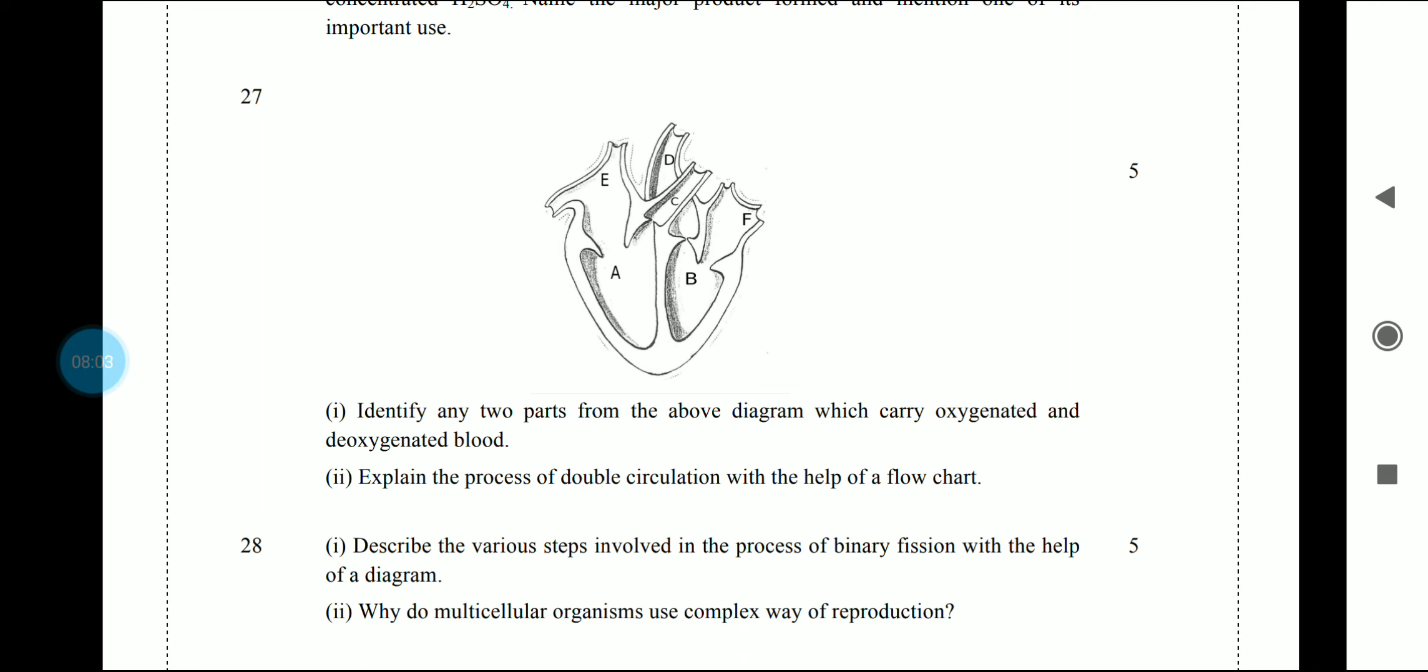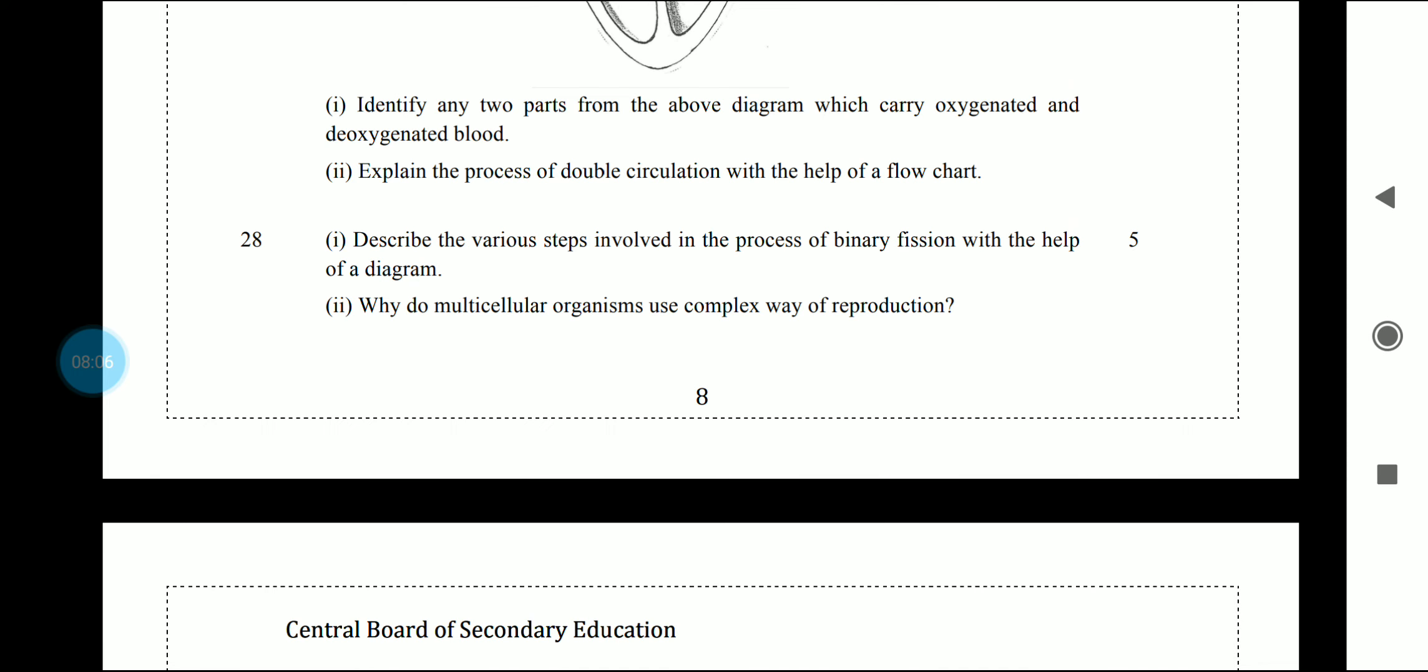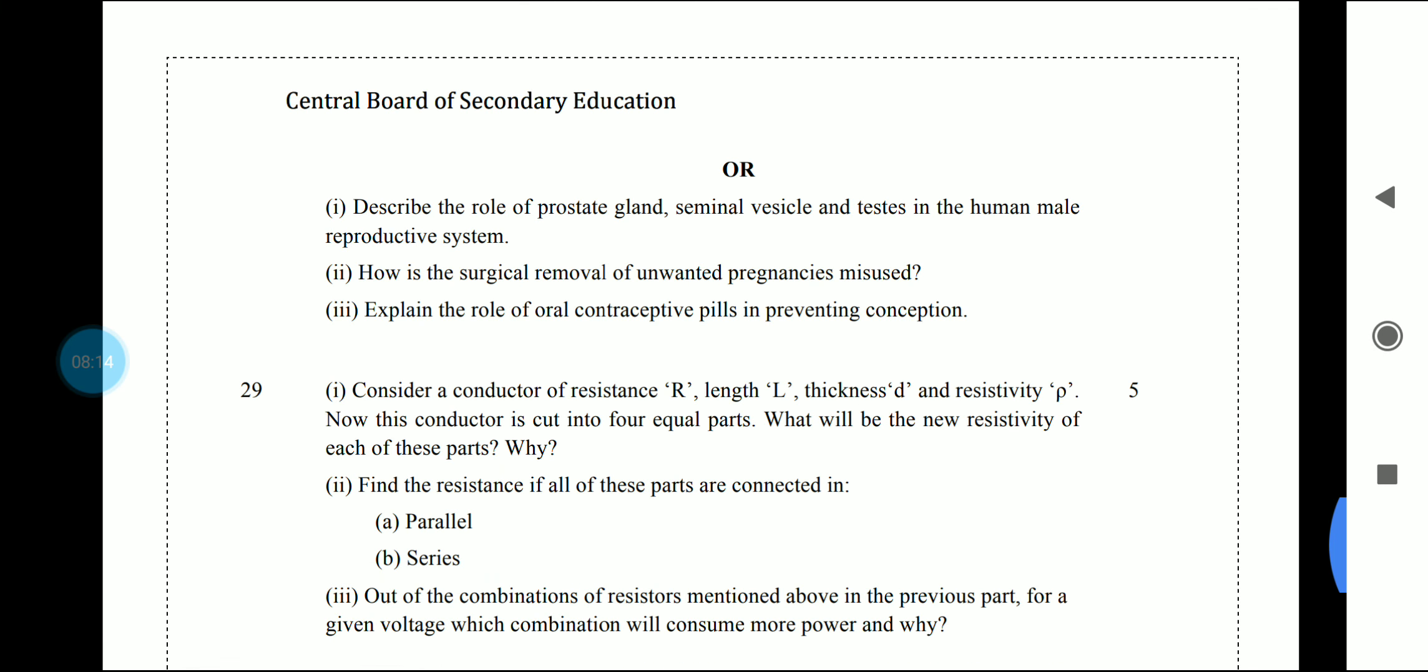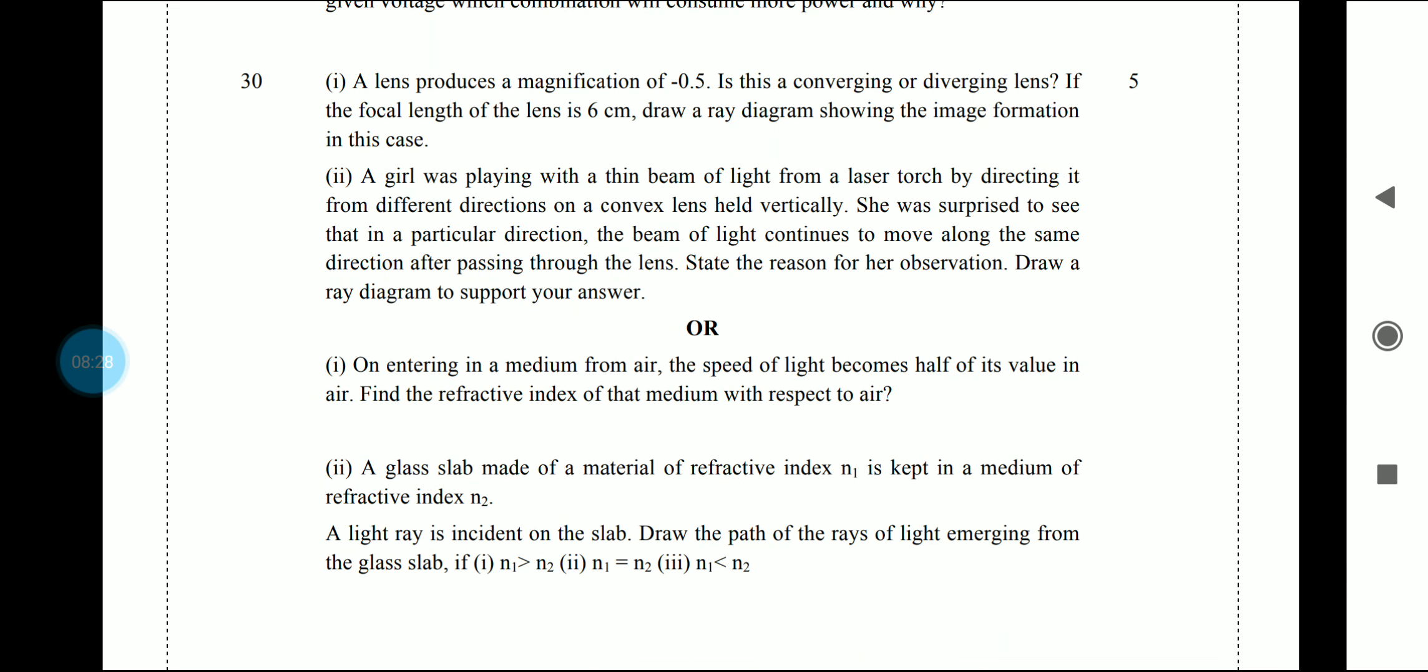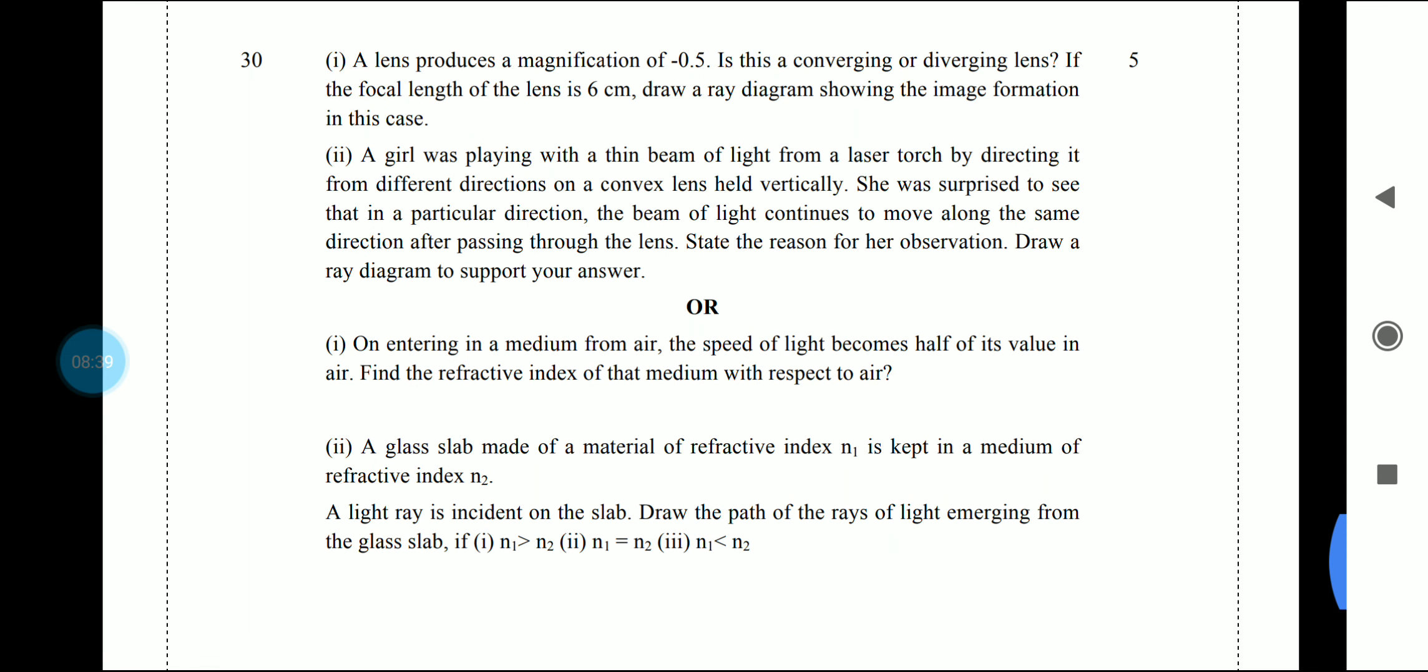Question 28 is simple, it's a reproduction chapter with a direct question. There is also an option. In question 29, there is a simple question from the electricity chapter. Question 30 is a very big question from the light chapter. There is also an option on human eye. You can solve it.